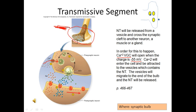The calcium entering the cell is attracted to the vesicles, which are negatively charged due to the plasma membrane. Those negatively charged vesicles migrate to the negatively charged end of the synaptic bulb — also made of plasma membrane — causing the neurotransmitters to be exocytosed. They then cross the synaptic cleft and travel to the next neuron.